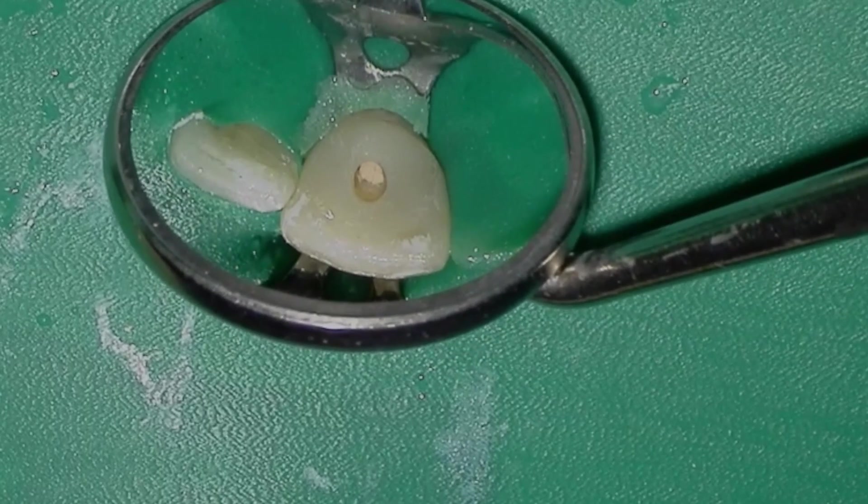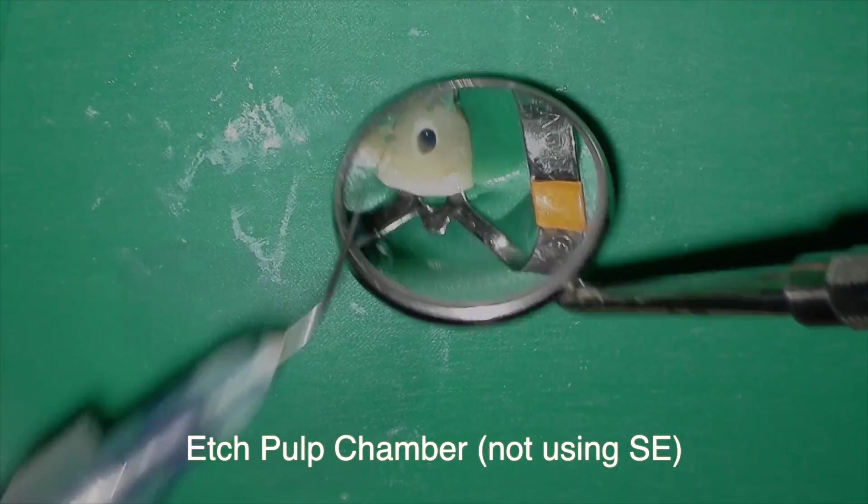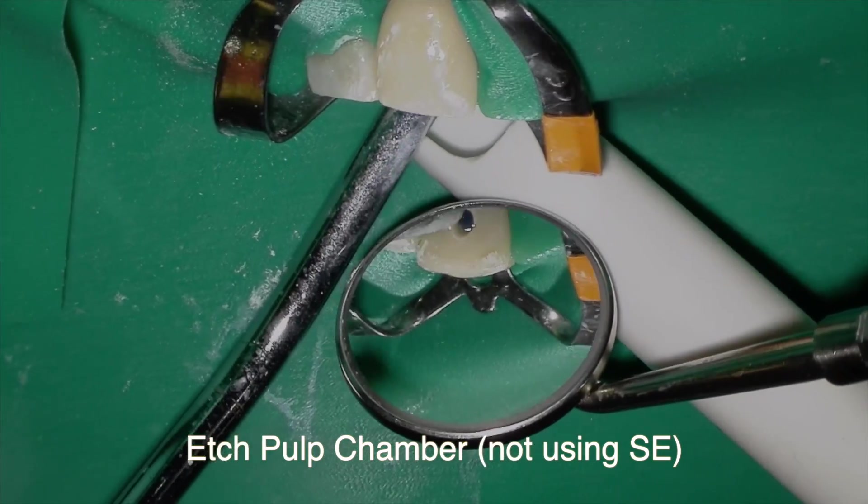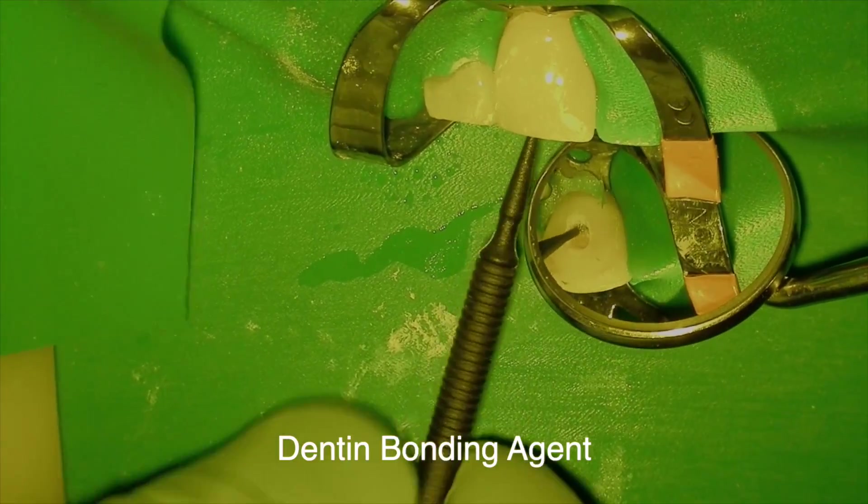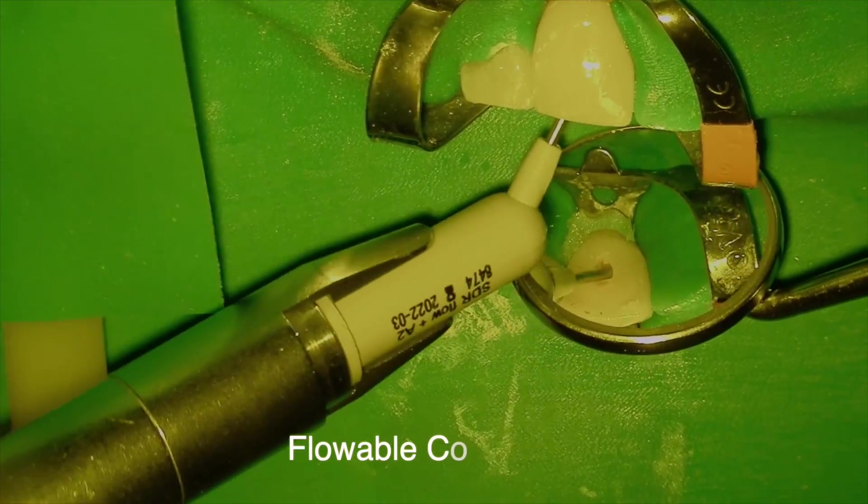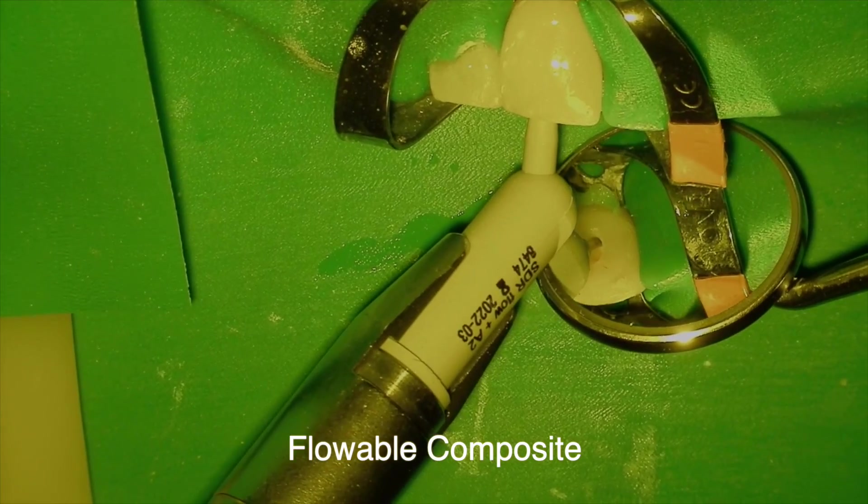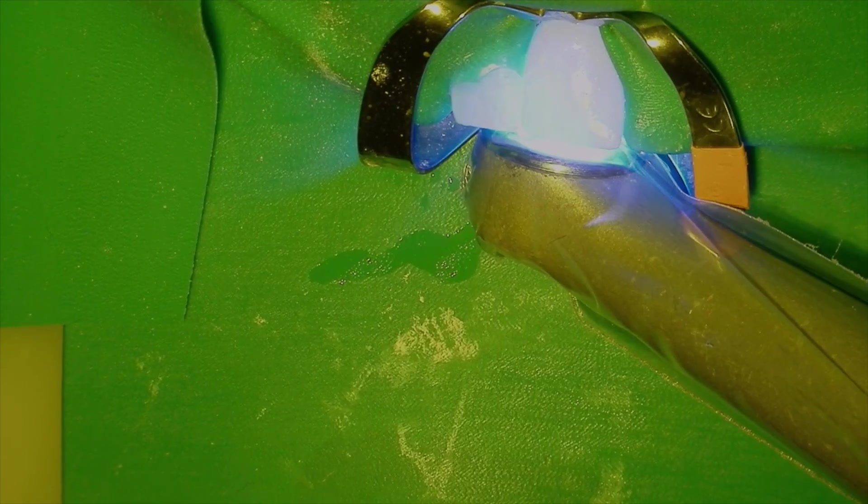Okay, so now we've got our obturation completed, fairly predictable, and off we go to restore the tooth. So the first step I'm going to do is I'm going to etch the pulp chamber. Then I'm going to place my dentin bonding agent and light cure that. So on top of the gutta percha, I'm going to place flowable composite, and it's so much easier to place the flowable rather than conventional composite.